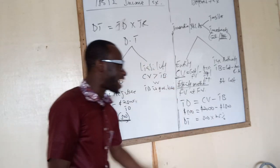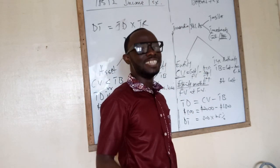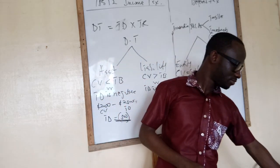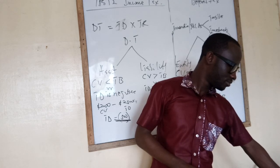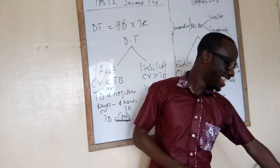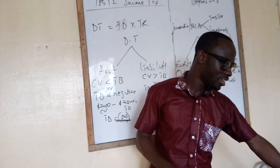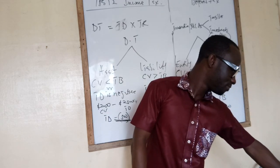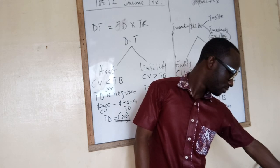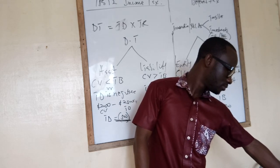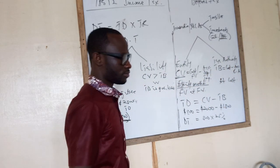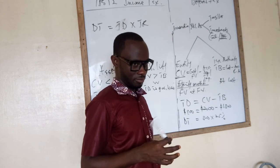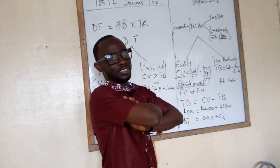Now let's do an English discussion. What is the tax base of an asset? The cost less the accumulated capital allowance. That's correct. Then what is the temporary difference? The difference between the current value of the asset and the tax base of the asset.